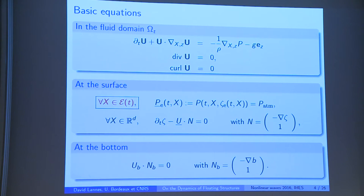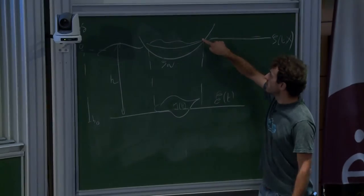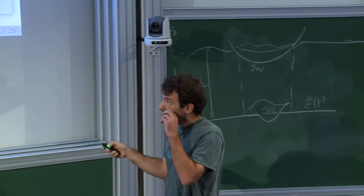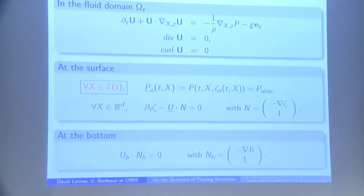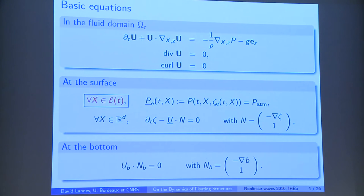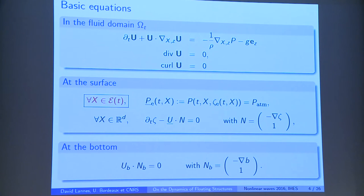I need some bottom and surface boundary conditions. The bottom boundary condition is the standard one that the fluid is impermeable, so the velocity is tangential at the bottom. At the surface, I have the standard kinematic condition, which relates the time derivative of zeta to the normal component of the velocity. This kinematic condition, which states that any fluid particle at the surface stays at the surface, is valid everywhere. The other condition — I have a pressure at the surface — the pressure is equal to the atmospheric pressure, which will be assumed to be constant. I don't have surface tension effects.